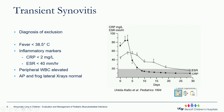Transient synovitis is a diagnosis of exclusion. Fever is usually milder. Since it's a diagnosis of exclusion, serum inflammatory markers are typically obtained — they can be abnormal, although they are also less elevated compared to septic arthritis.